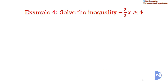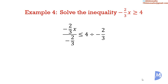A fourth and final example: Solve the inequality negative 2 thirds x is greater than or equal to 4. We have negative 2 thirds being multiplied by x, so we divide both sides by negative 2 thirds to remain with x only. When we divide by a negative number, the sign is reversed. So we get negative 2 thirds x divided by negative 2 thirds — which becomes less than or equal to — equals 4 divided by negative 2 thirds. The negative 2 thirds cancel. 4 divided by negative 2 thirds is the same as 4 multiplied by negative 3 over 2: 2 goes into 2 once and 2 goes into 4 twice, giving 2 multiplied by negative 3 equals negative 6. Therefore, x is less than or equal to negative 6.